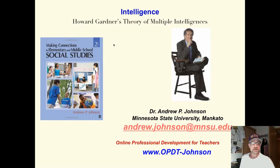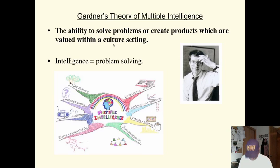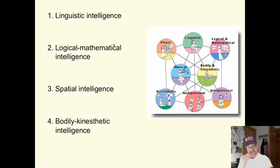How are Gardner's theories of multiple intelligence? Gardner says intelligence is the ability to solve problems or create products which are of value within a cultural setting. Intelligence essentially is problem solving. Instead of a single entity intelligence with many facets, Gardner has identified eight types of thinking.